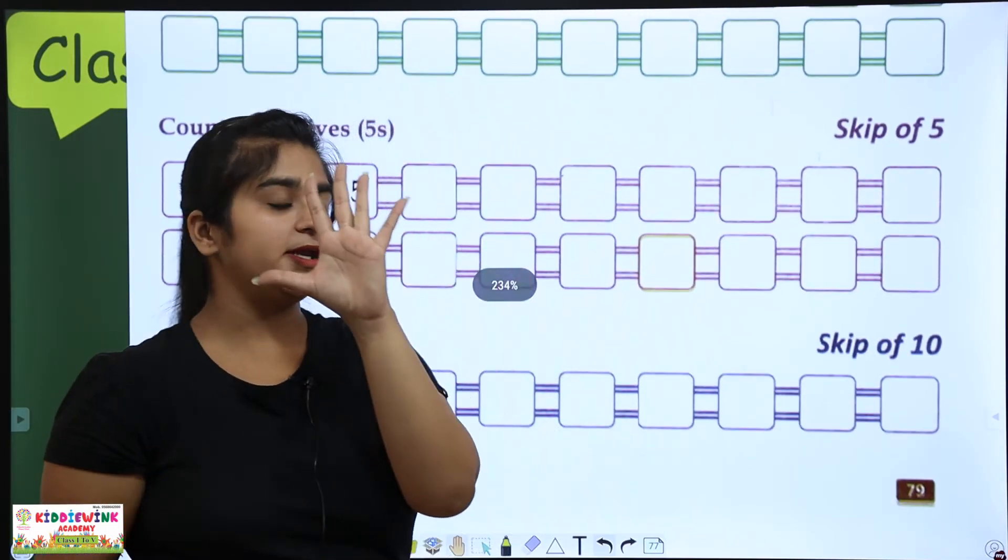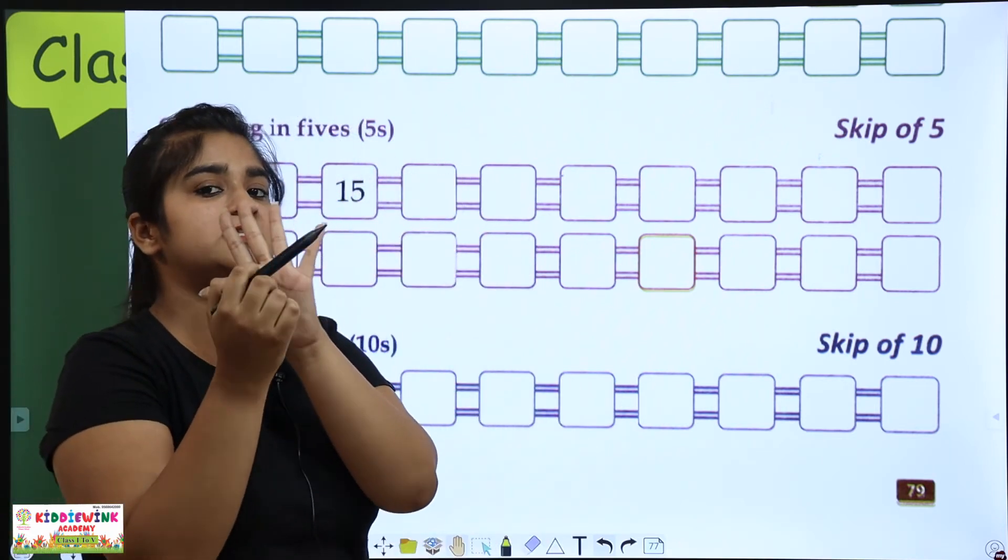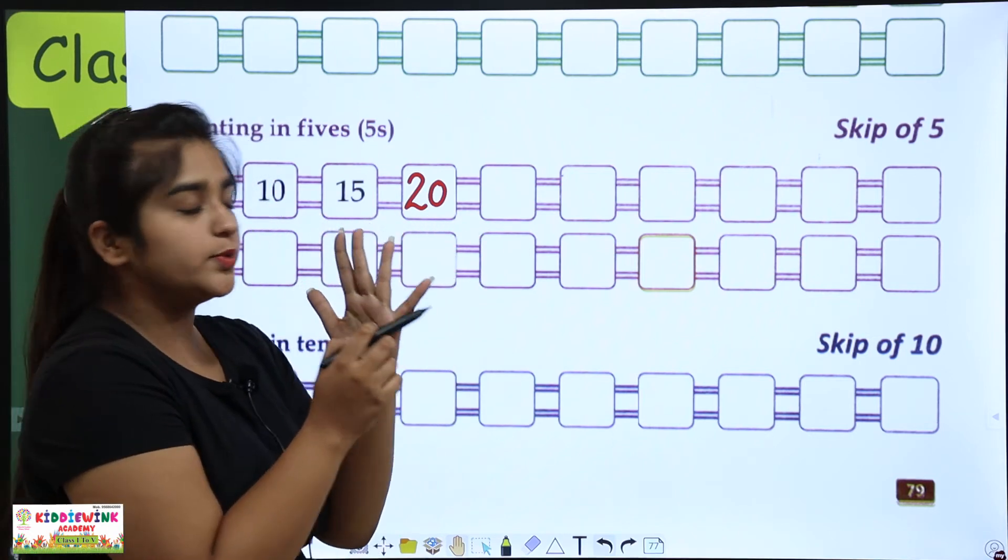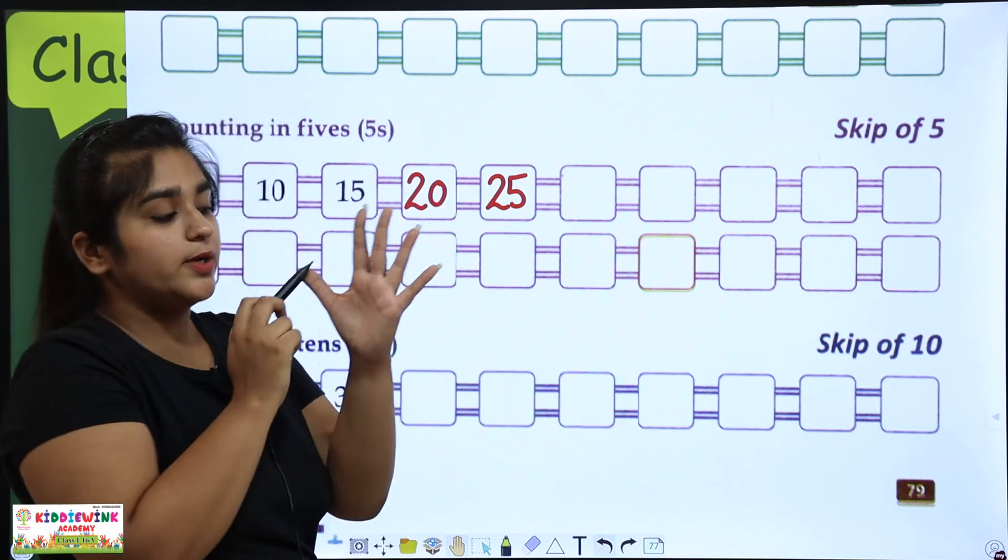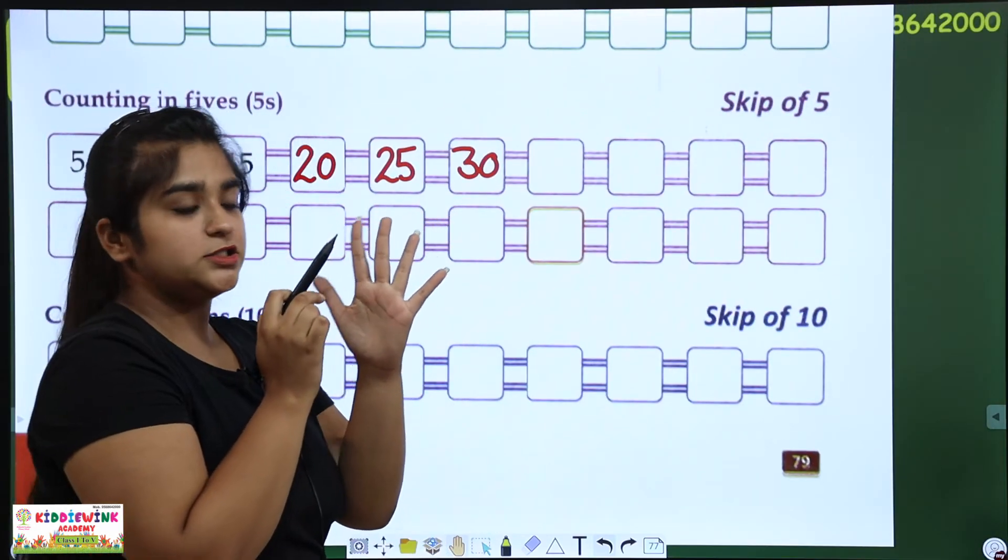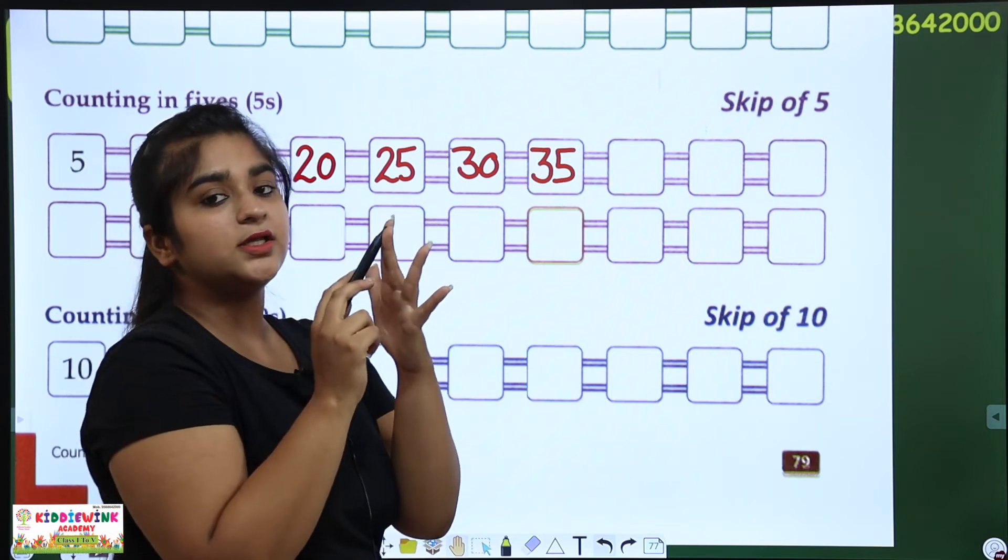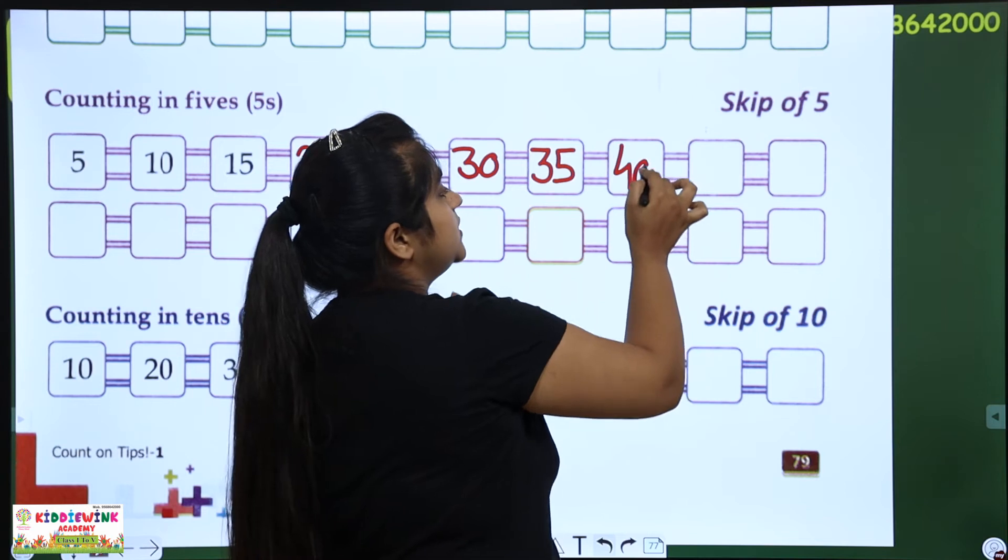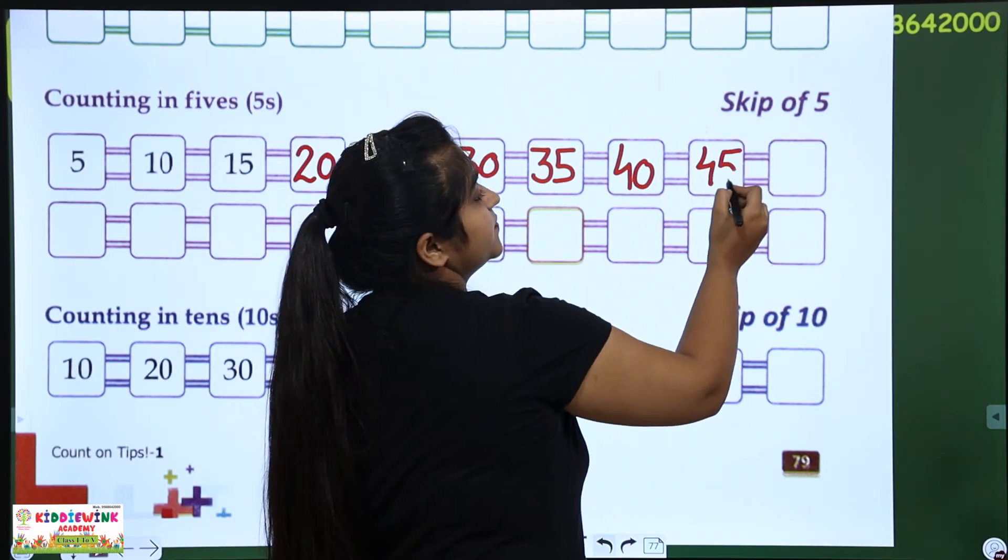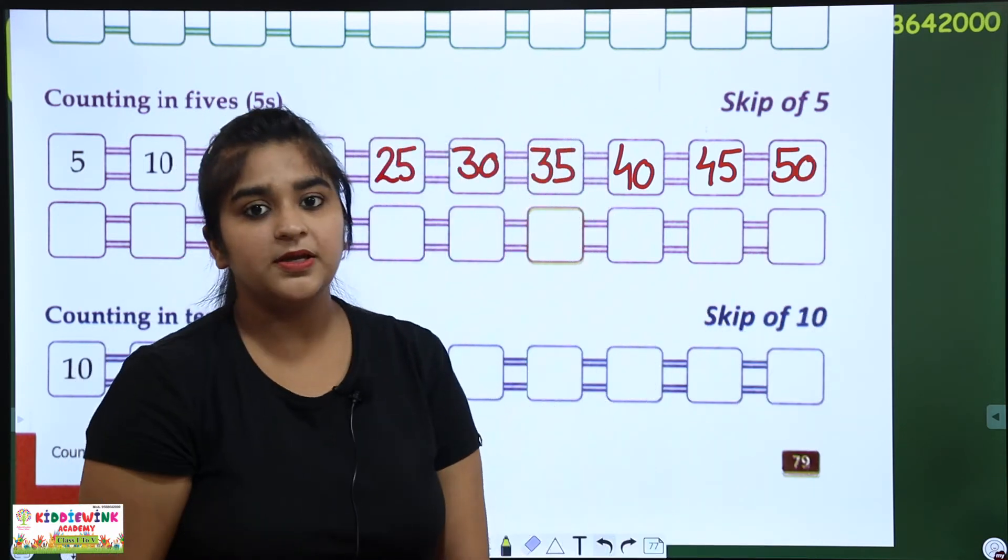Skip of 5, 5 fingers open. 5, 10, 15. 5-5 gap. 26, 27, 28, 29, 30, 30. 31, 32, 33, 34, 35, 35. 36, 37, 38, 39, 40, 40. 41, 42, 43, 44, 45, 45. 46, 47, 48, 49, 50. And what's next? 50, 50. This is our skipping by 5 complete.